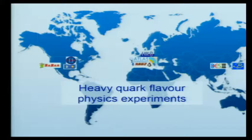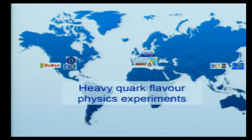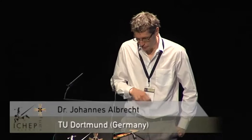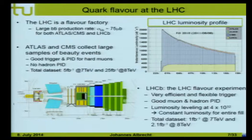Before discussing these measurements, let me briefly introduce the players. There are a few different centers where flavor physics happens in the world. At the moment, CERN is clearly the dominant player. There is also flavor physics at the Tevatron, at the BaBar and Belle flavor factories, and at BESIII, the charm factory in China. At the LHC, proton collisions at 7 or 8 TeV — and soon 13 TeV — give a huge beauty production cross-section of 75 microbarn, with charm and tau even larger.